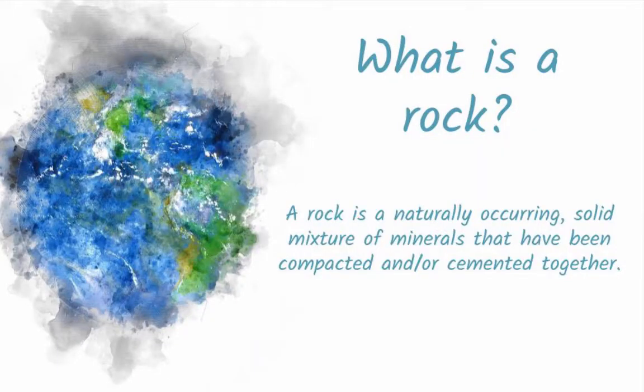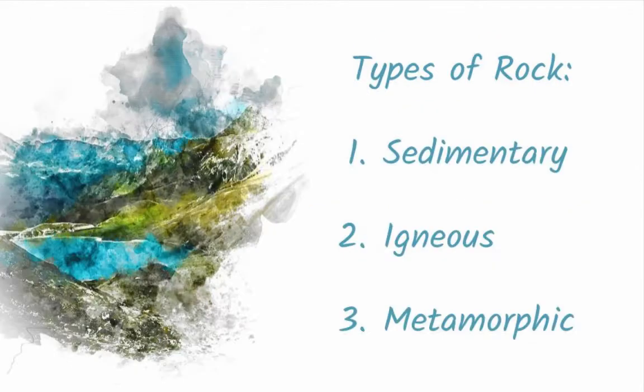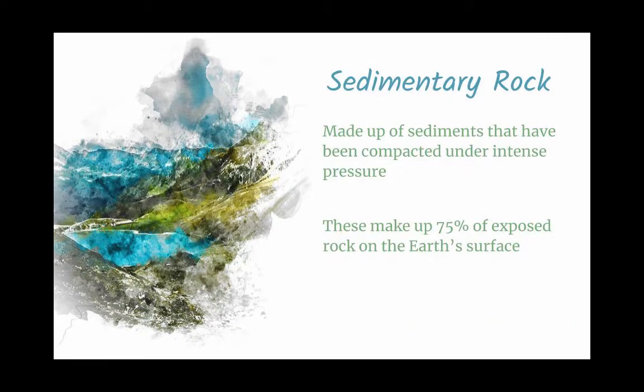A rock is a combination of many different minerals — that's the difference between a mineral and a rock. A mineral is your naturally occurring element or compound, but a rock is a combination of many of those. There are three different types of rocks: sedimentary rocks, metamorphic rocks, and igneous rocks. Sedimentary rocks are formed from particles of sediment and make up about 75 percent of exposed rock on the surface of the land.